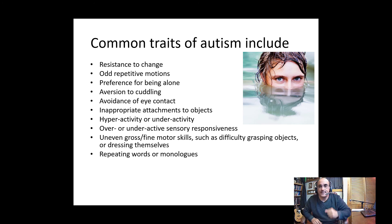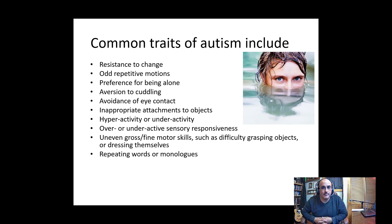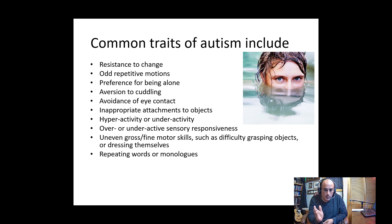I know someone with autism, for example, who when he knows he's done something incorrectly, talks in a kind of imitation of his mother's voice, reminding himself to 'smarten up, do the right thing, shake hands, make eye contact.' You can tell it's not him — it's a replay of what a parent or teacher once told him. So sometimes these monologues and repetitions serve as internal prompts; other times they are stimming or expressions of interest.